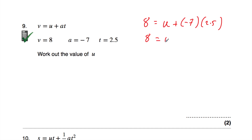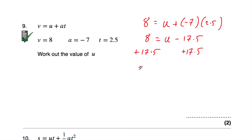So we've got 8 is equal to u minus 17.5. Now we want to find out what u is, so let's add 17.5 to both sides. 8 plus 17.5 equals 25.5, and on the right-hand side we're just left with u. So the value of u is 25.5.